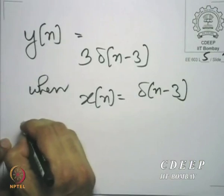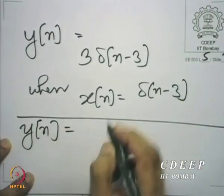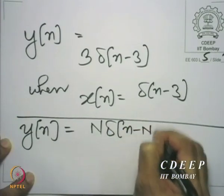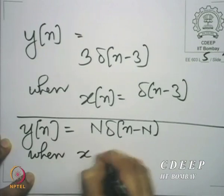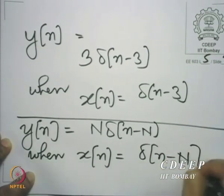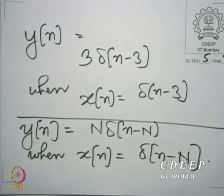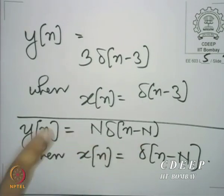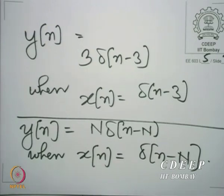Obviously, this system is not shift invariant. If it were, I should have gotten output 0 here too, but I do not. The disobedience of shift invariance has come because the system is sneakily looking at the clock when finding the output. When you bring in the clock in your output, shift invariance is disobeyed.